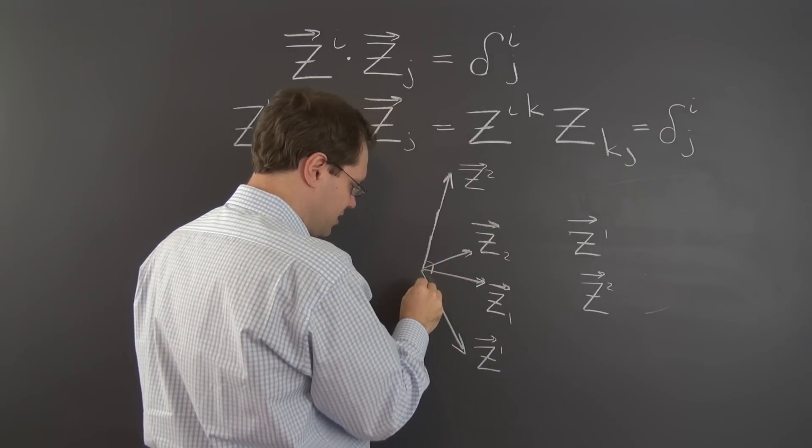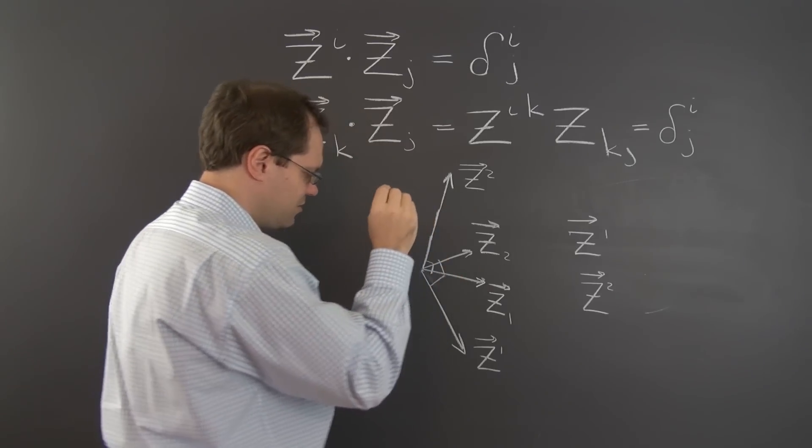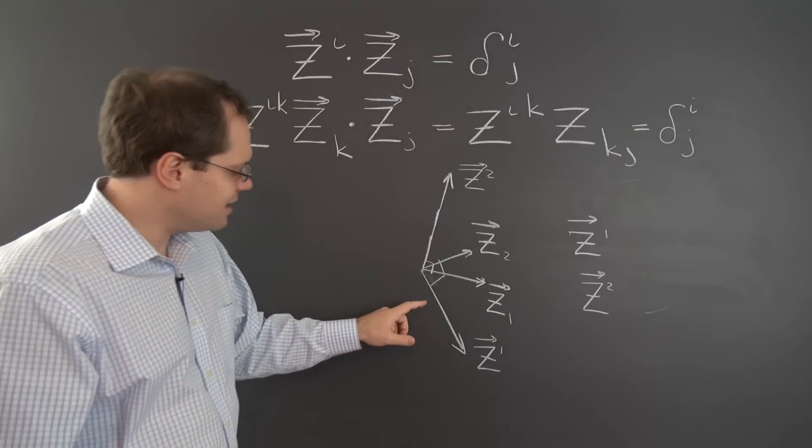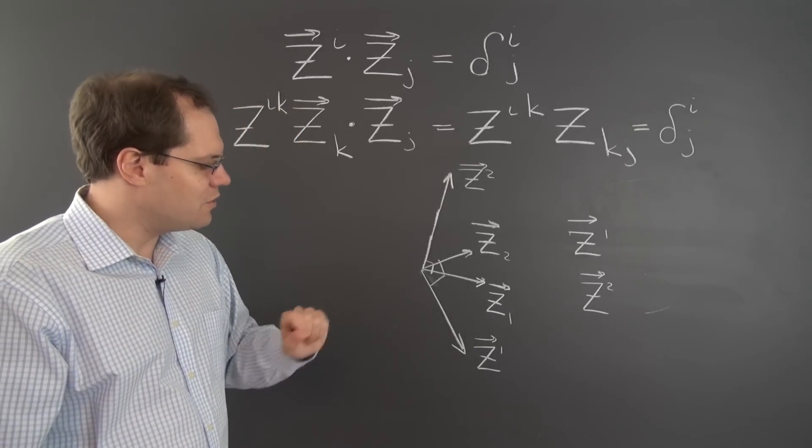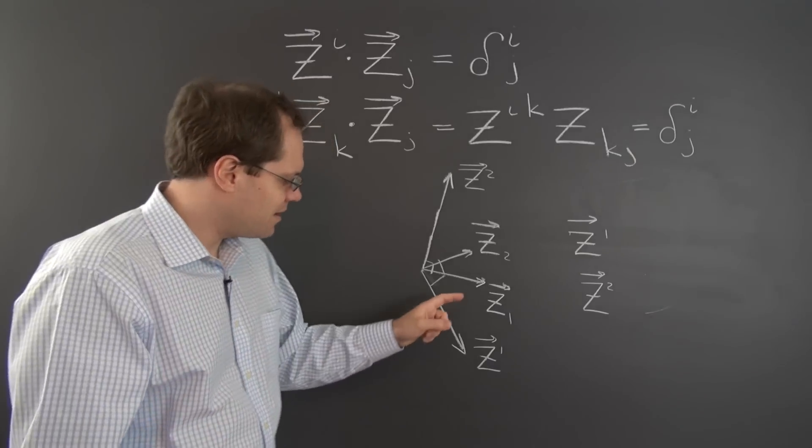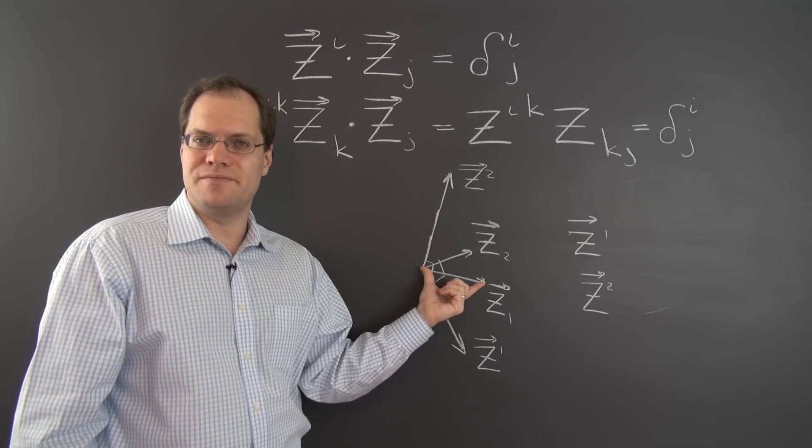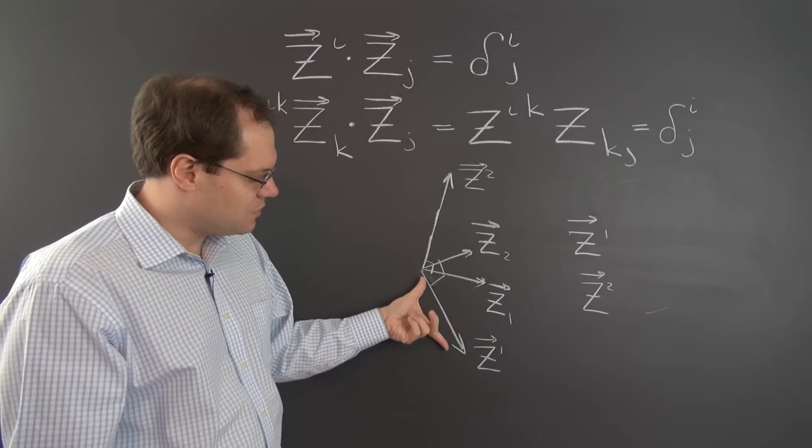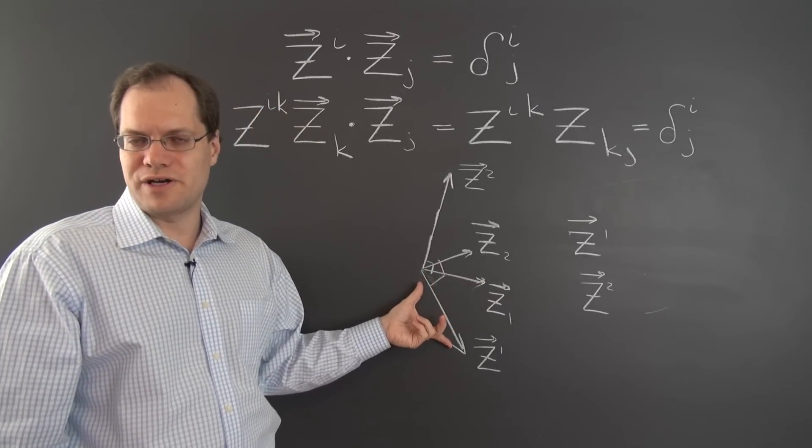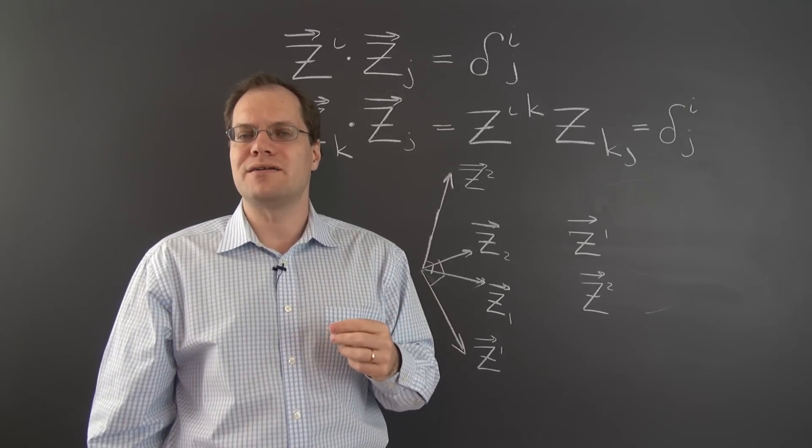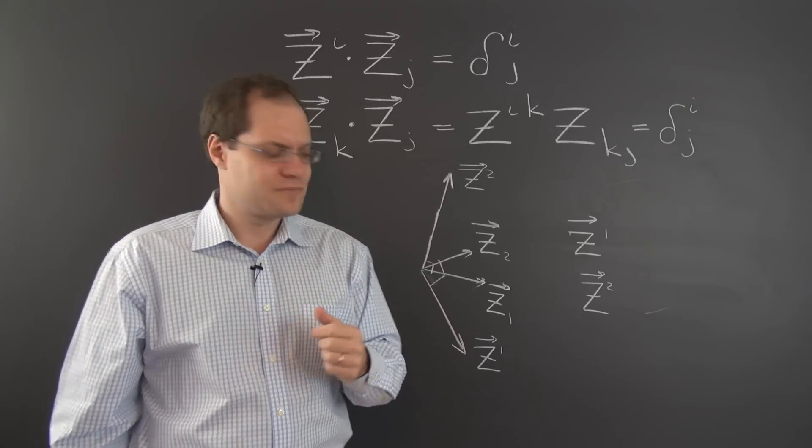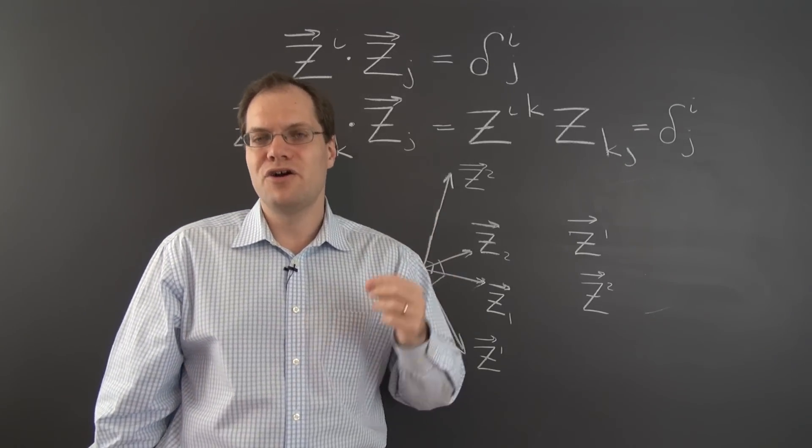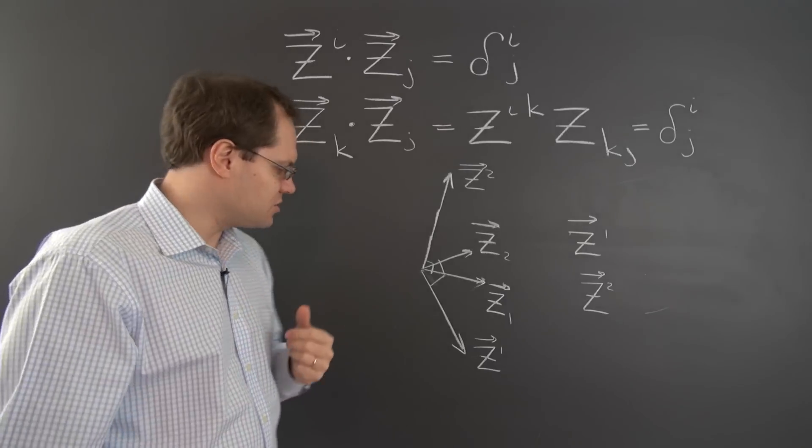So this is a right angle right here, and this is a right angle right here. Well, the only thing that I can add is that if the length of z_1 is less than 1, then the length of z^1 contravariant is greater than 1. Why? Because their dot product equals 1. So the product of their lengths must be greater or equal to 1. So that's just one additional note.